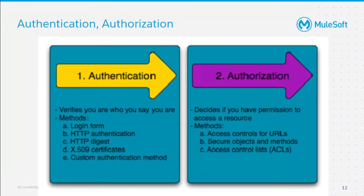Moving on to authentication and authorization — this is the most common and most important one. Almost every application requires authentication and authorization. The difference: authentication is like the API Gateway acting as a building's watchman allowing you to pass through. But authorization means you need to make sure you are eligible to make changes and access resources. Your API actually has that authorization.